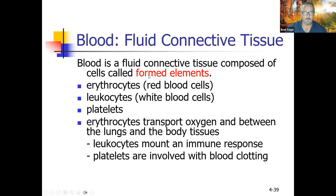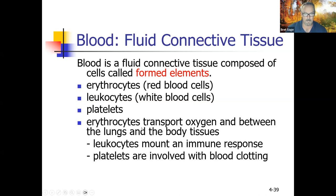Fluid connective tissue: blood is composed of cells called formed elements — not all of them are true cells. Red blood cells (erythrocytes) lack a nucleus, so they're not really cells. White blood cells (leukocytes) are the only true cells in blood because they have a nucleus. Platelets are just fragments for clotting. Erythrocytes transport oxygen between lungs and body tissues. Leukocytes mount an immune response. Platelets are involved in blood clotting.